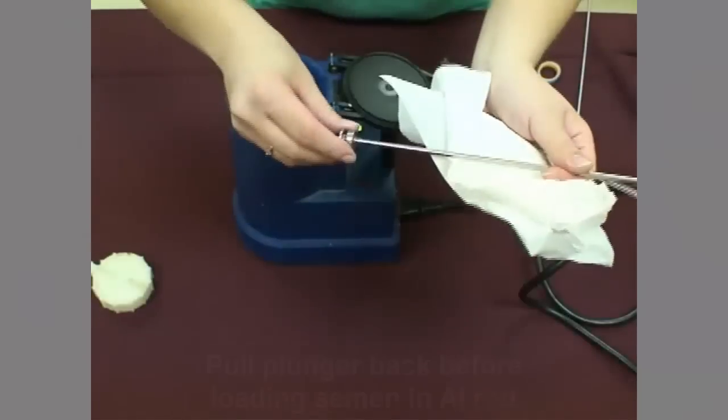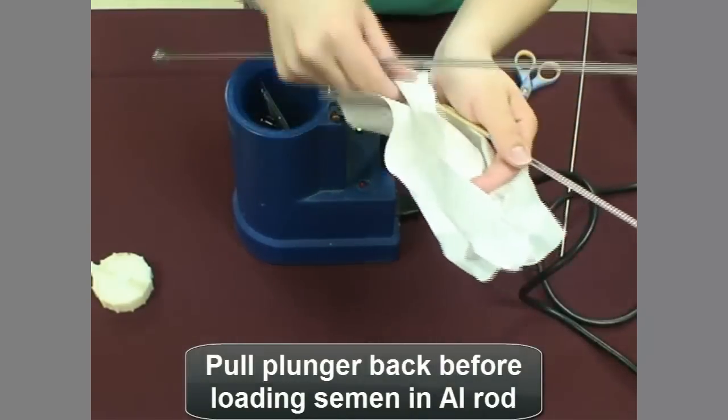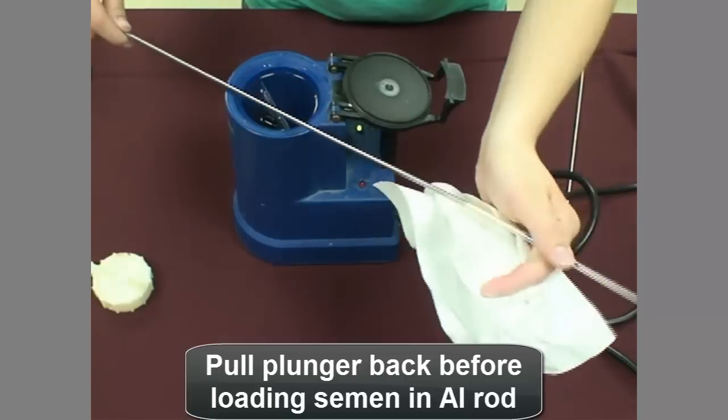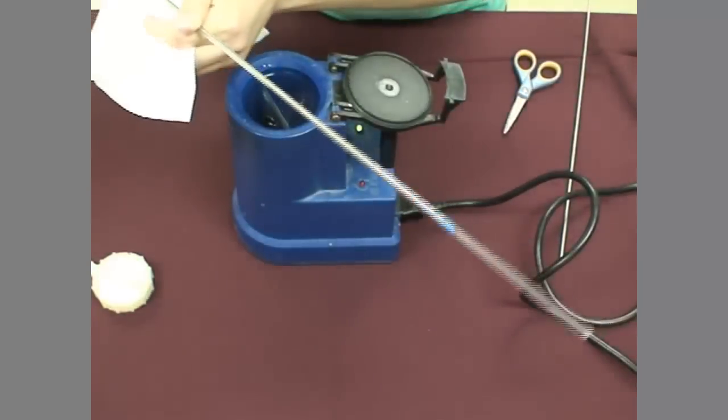The rod has a plunger that, when depressed, pushes the semen from the straw. Make sure that this plunger is pulled out of the rod several inches when loading semen and prior to insemination.